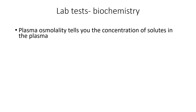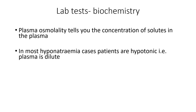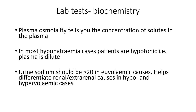The main tests are the biochemistry tests. Plasma osmolality tells you the concentration of solutes in the plasma. In most cases, patients are hypotonic — their plasma is dilute. Hyper- or isotonic cases fall under a separate umbrella. Urine sodium is normally over 20 in euvolemic cases. In hypo- and hypervolemic cases, the urine sodium helps differentiate renal from extra-renal causes, making it a crucial test and one of the main branching points in the algorithm.